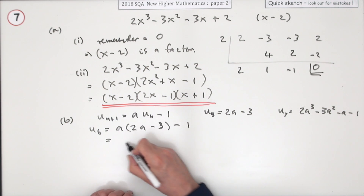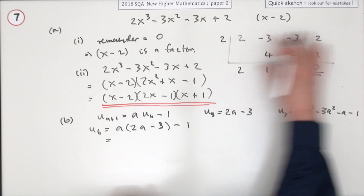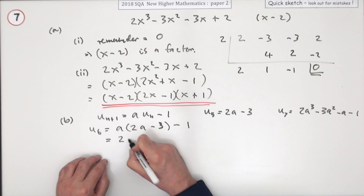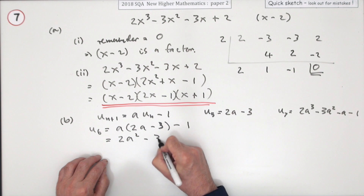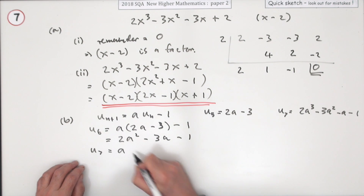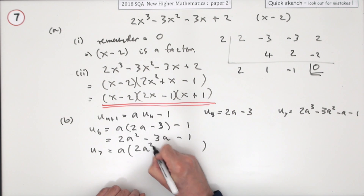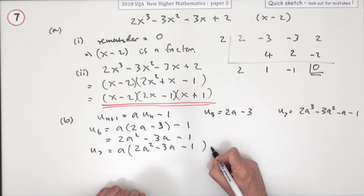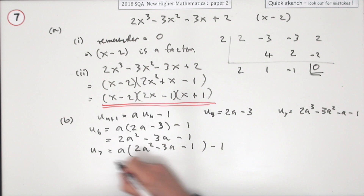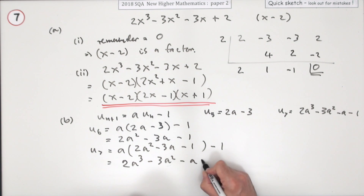Better multiply that out: 2a squared minus 3a minus 1. Now go up to u7. So u7 will be a times the previous one — this whole thing — minus another 1. So finally you've got 2a cubed minus 3a squared minus a minus 1, as required.